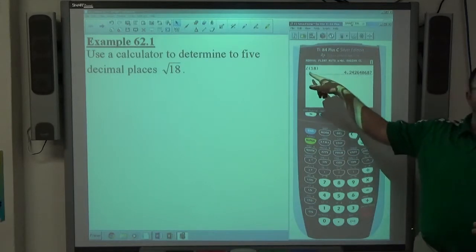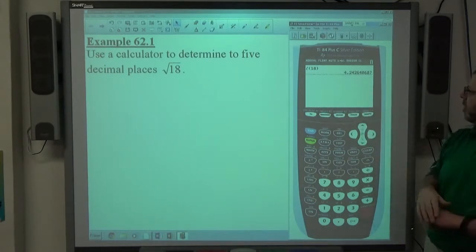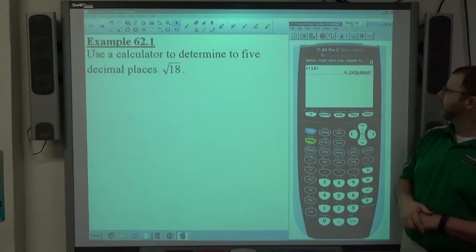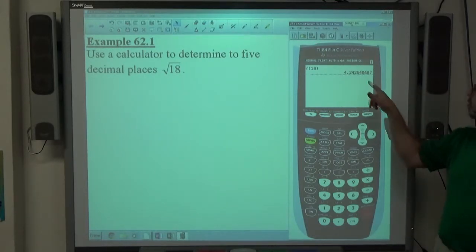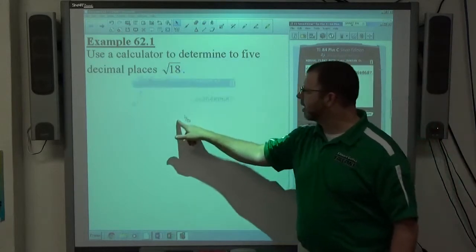If you type in the square root of 18 on your calculator, you should see 4.242640687, or something along those lines, depending on how many decimal places your calculator rounds to.